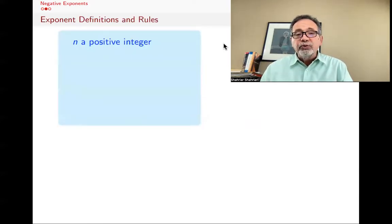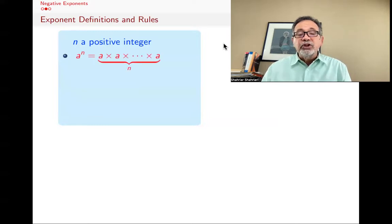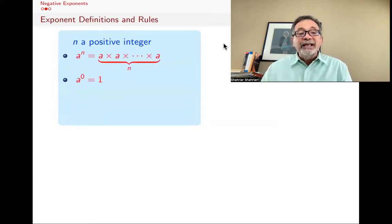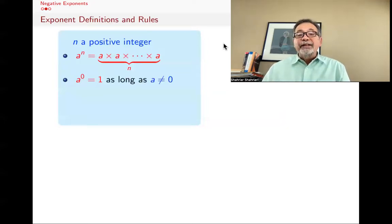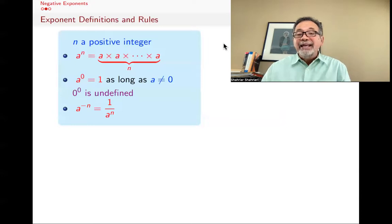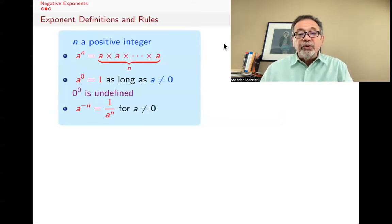So just reminding you of all rules of exponents and definitions. If n is a positive integer, when you say a to the n, you mean multiply that thing by itself n times. Something to the zero is defined to be one, as long as a is not zero, and zero to the zero is undefined. And a to the minus n, as we have been discussing, is one over a to the n, and that's for a not equal to zero.